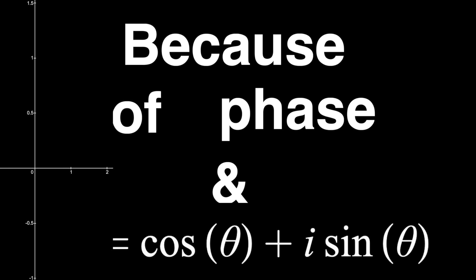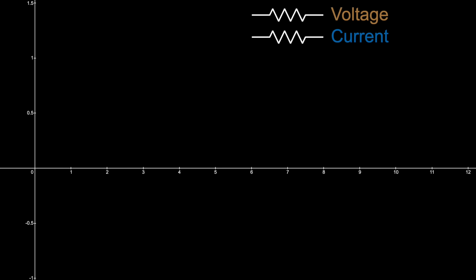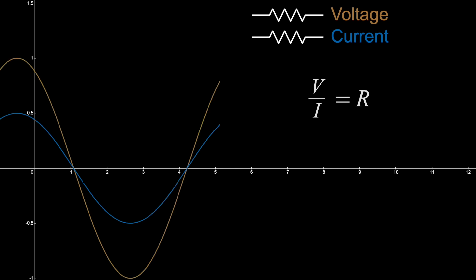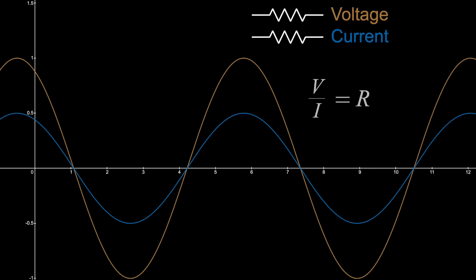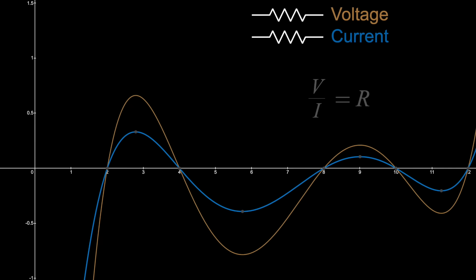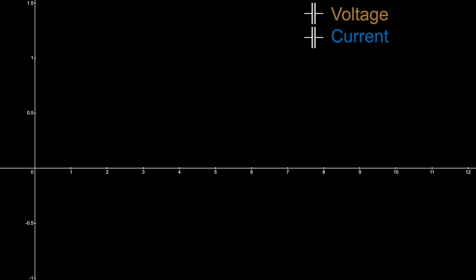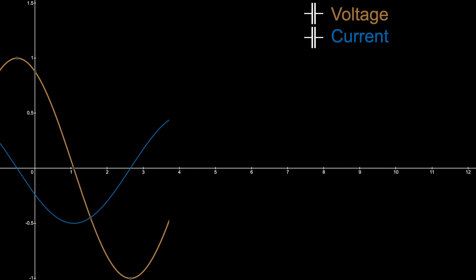With just resistors, we don't need imaginary numbers, because the ratio of voltage and current for a resistor is always constant. They are in phase and the math is much easier. Even if the input is not sinusoidal, voltage and current will still move together. With a capacitor, this is not the case. If you have a sinusoidal input and plot voltage versus current across a capacitor, you'll find they are out of phase by 90 degrees.